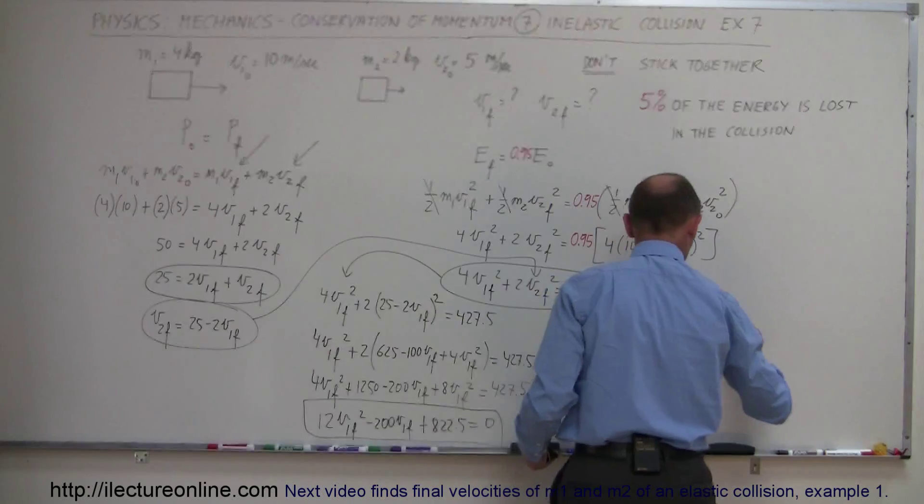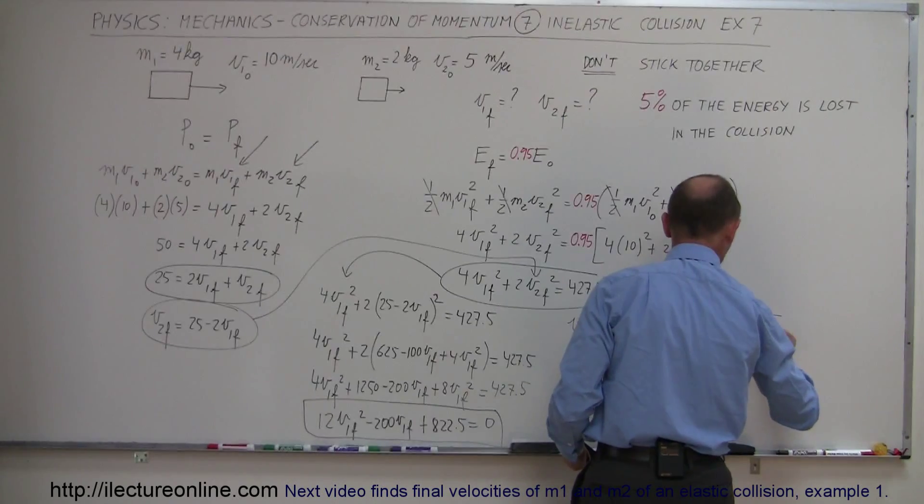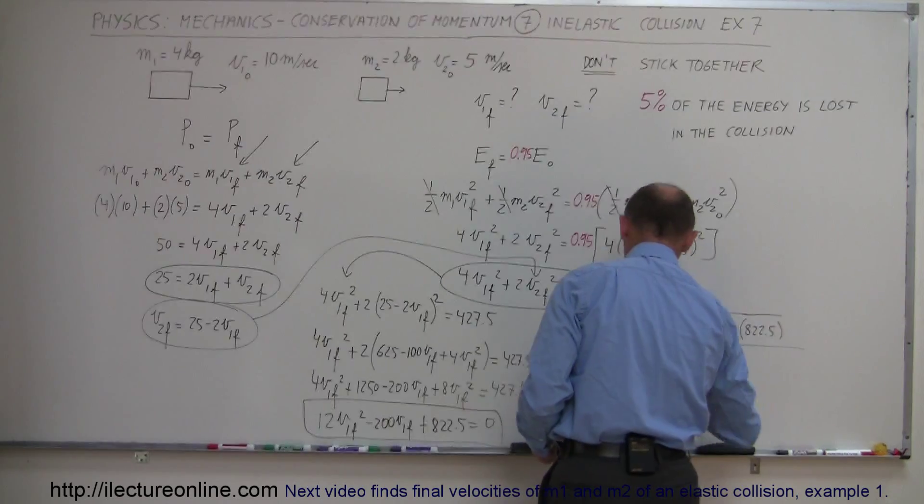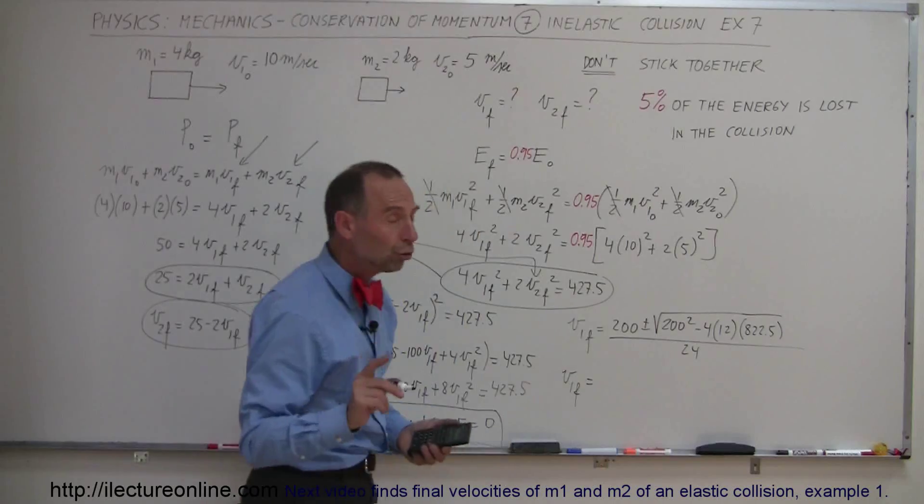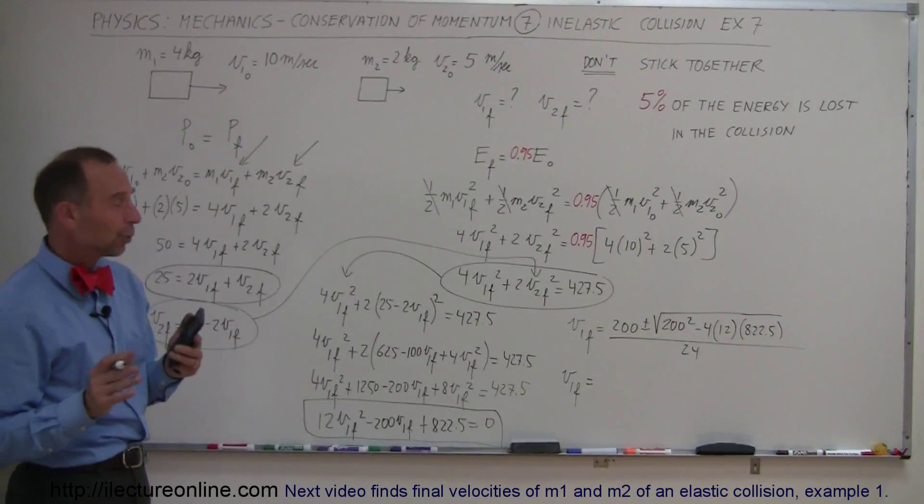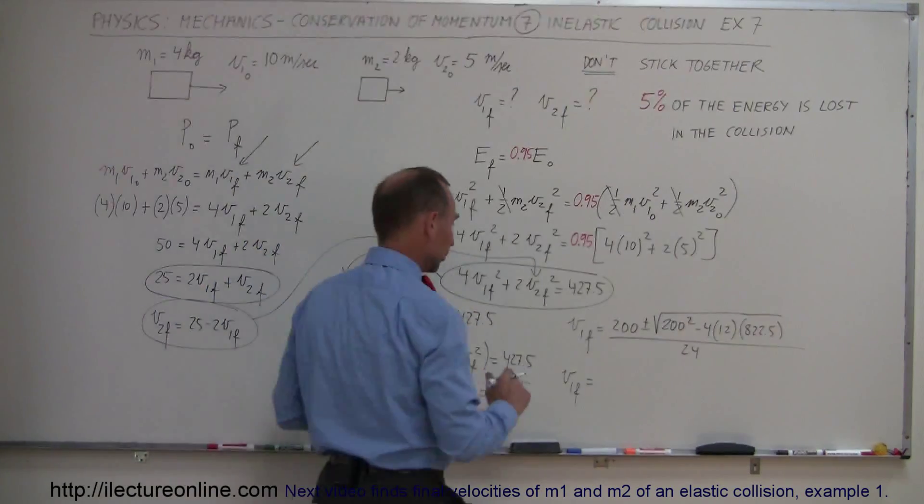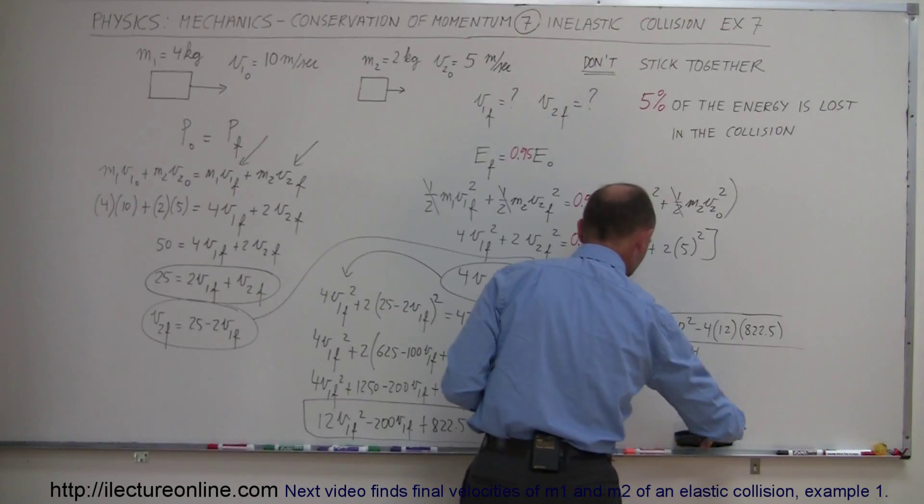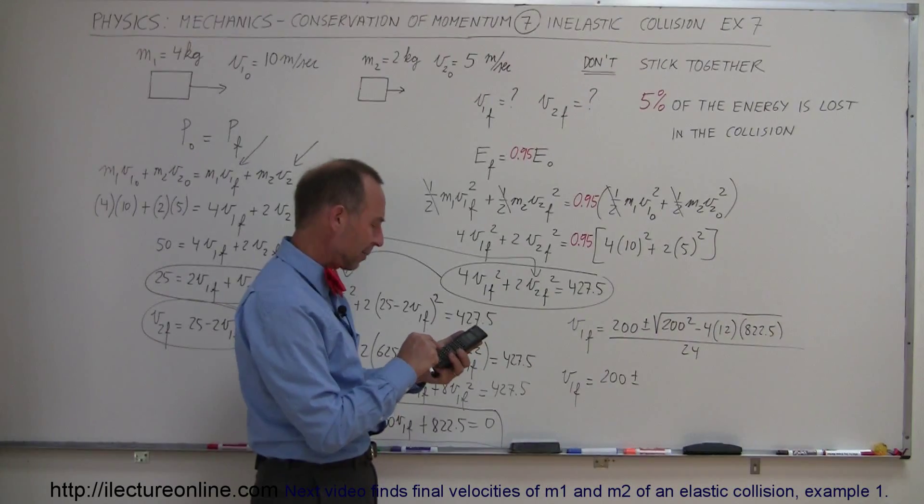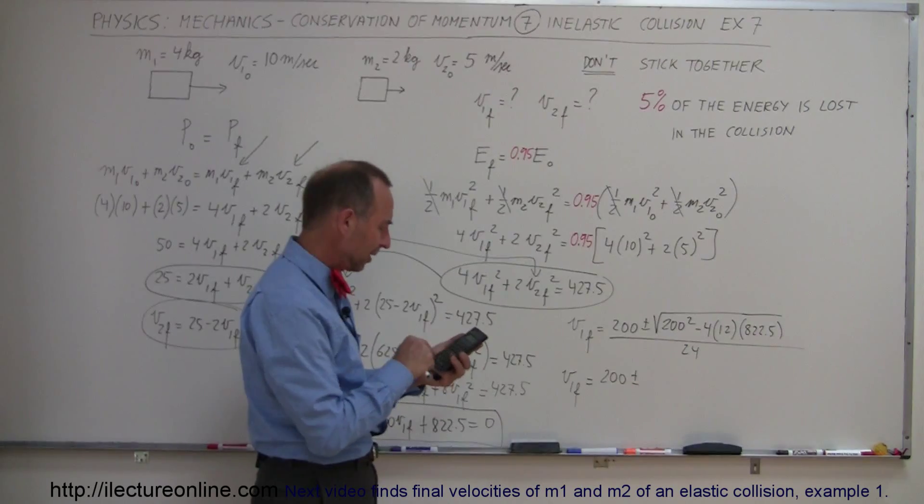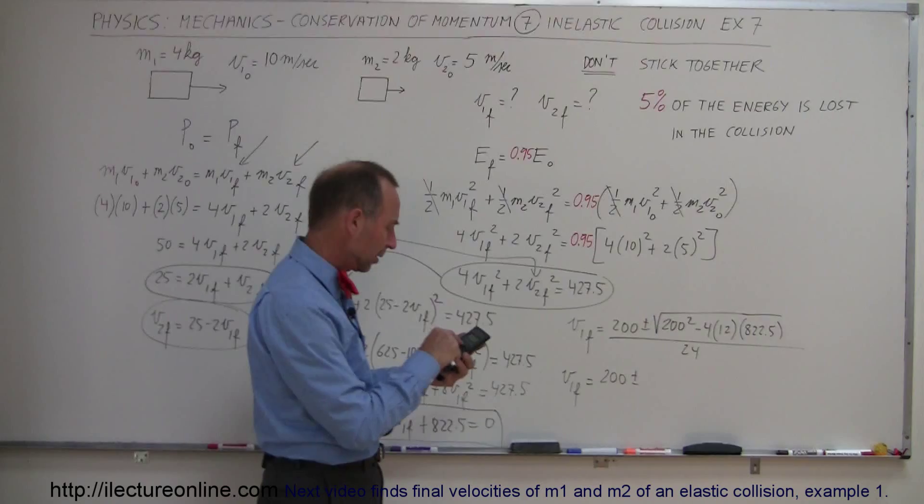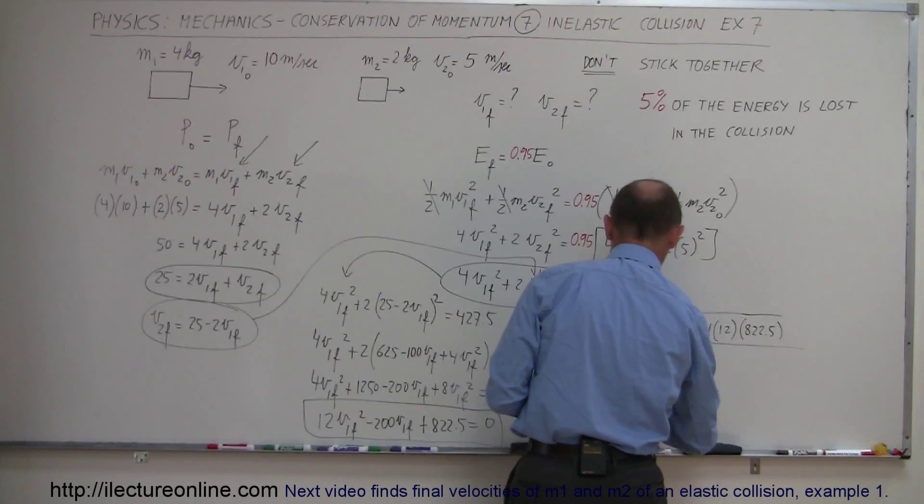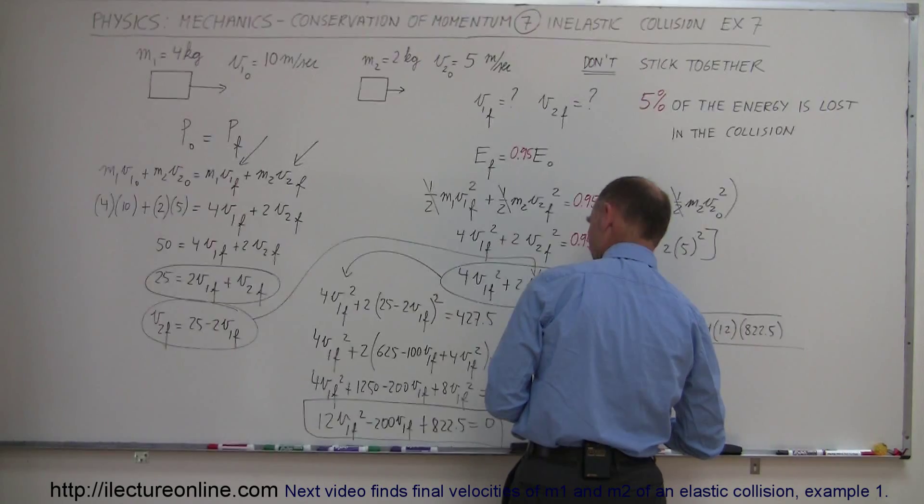4 times a which is 12 times c which is 822.5 and the whole thing divided by 2a which is 24. All right so V1 final equals this should give us two possible values for V1 and one of them will seem reasonable, the other one probably not. Let's find out. So this is equal to 200 plus or minus the square root of that. We can just work that out all together so we have 822.5 times 48, that's 4 times 12 is 48, that becomes minus and we add that to 200 squared. So we have the square root of 520, take the square root of that, we have 22.8. So plus or minus 22.8 all divided by 2a so 2a would be 24.